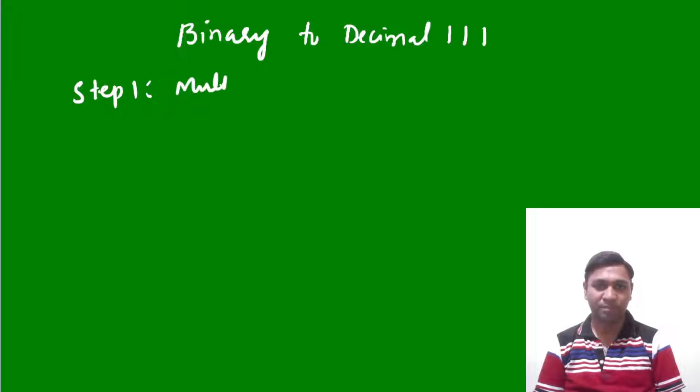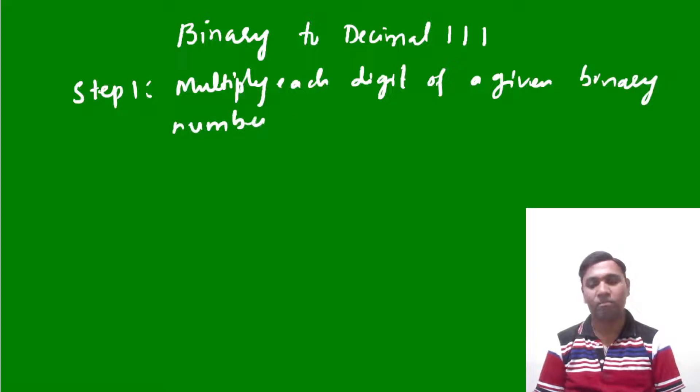Multiply each digit of a given binary number by its positional weight.